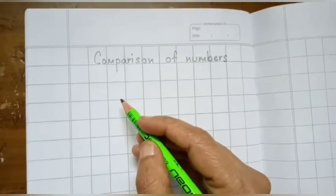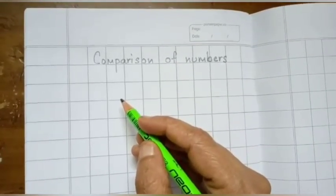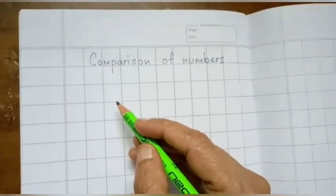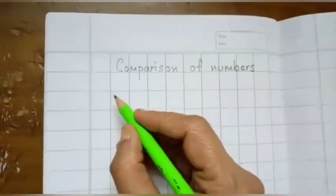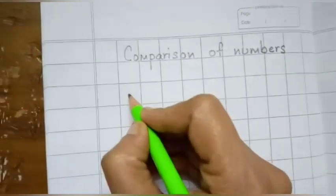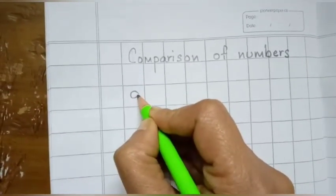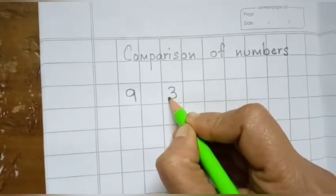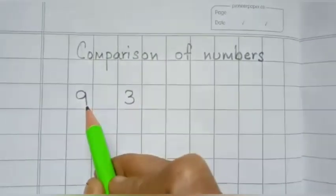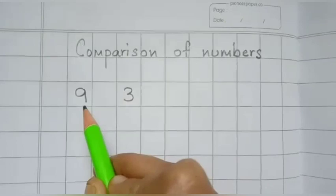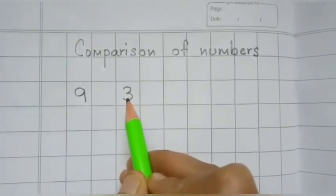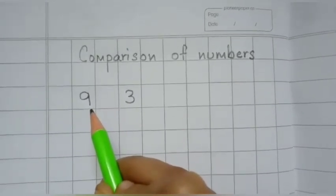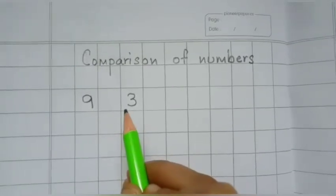Now I will tell you how to do that. When we compare numbers, we compare one number with another one. For example, let me take the numbers 9 and 3. We have two numbers here — one is 9, another is 3. We have to compare. What is compare? We have to identify which number is big and which number is small.